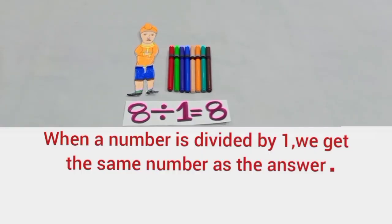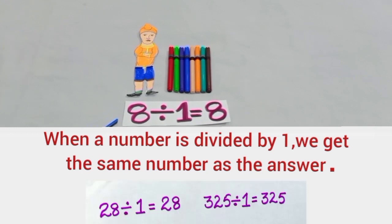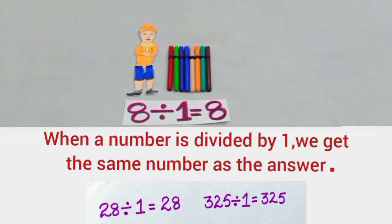That means when a number is divided by 1, we get the same number as the answer. So, whether it is a 2 digits number or 3 digits number, when it is divided by 1, we get the same number as the answer.